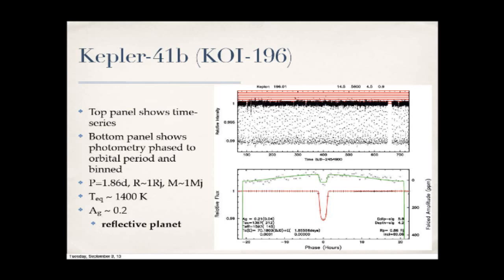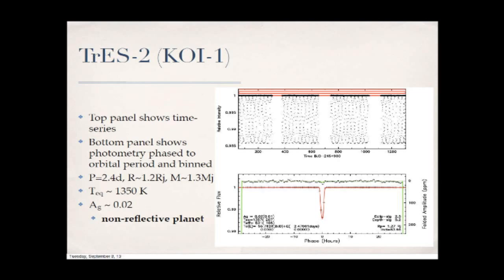In terms of numbers, Kepler-41b has an equilibrium temperature around 1,400 Kelvin and a geometric albedo around 20% — a reflective planet. Comparing with KOI-1 (TrES-2), plotted the same way, the levels have dropped dramatically: similar equilibrium temperature around 1,400 Kelvin, but the albedo drops to 2% or maybe lower. This is a non-reflective planet — probably darker than coal — showing that hot Jupiters come in a whole range of atmospheric reflectivity characteristics.